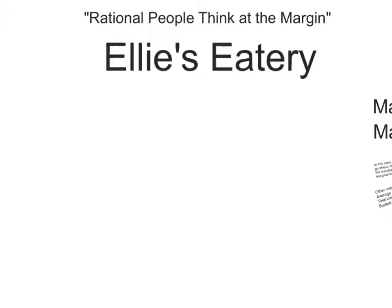Here's an explanation of the third principle in chapter one: rational people think at the margin. So let's take an example of a restaurant, Ellie's Eatery, and let's say that Ellie is thinking about adding a second dining room.